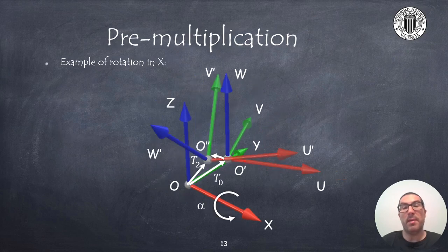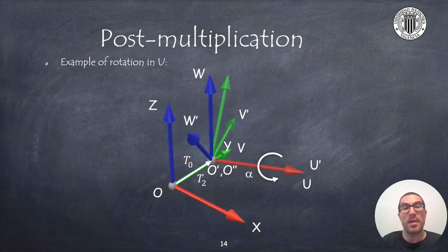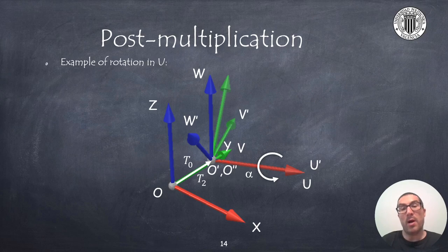Similarly, if we apply a rotation in x with respect to the fixed frame, we observe that the mobile frame moves and also rotates because the origins O and O' are not coincident. The new origin will be located in O' as you can see. On the contrary, if we perform the rotation with respect to the mobile frame, the origin will remain the same O', but the orientation is different because we have applied a rotation with respect to a different axis — before it was the x-axis, and now the rotation is with respect to the u-axis.